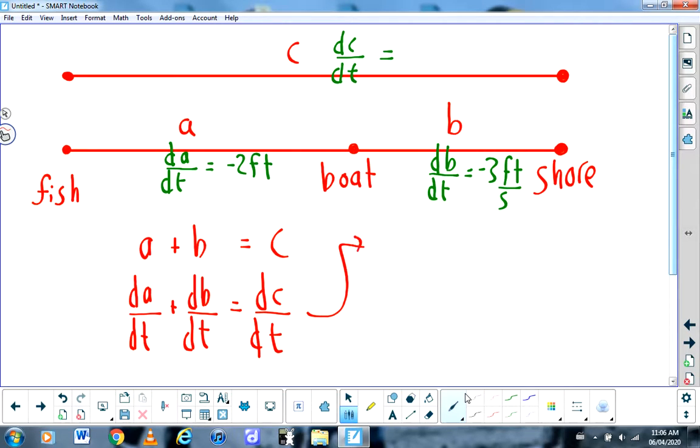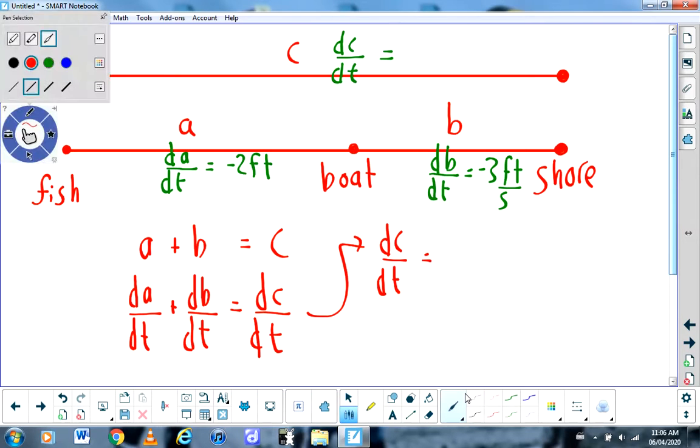And from there, you could say that dC/dt would be equal to dA/dt, which is negative two. We've got a little typo up here. This should be feet per second.